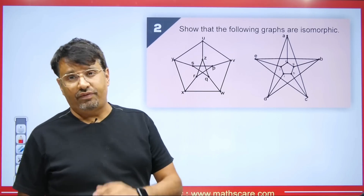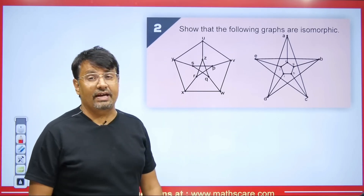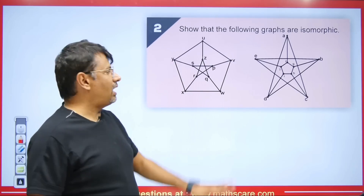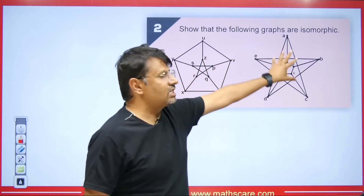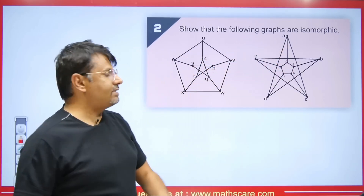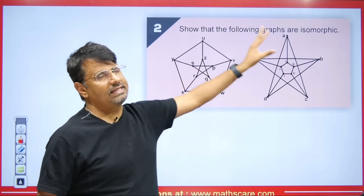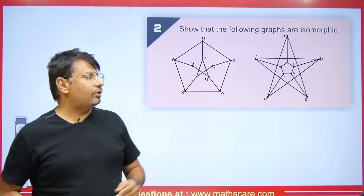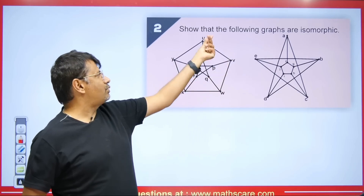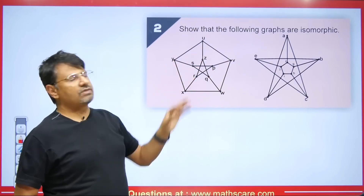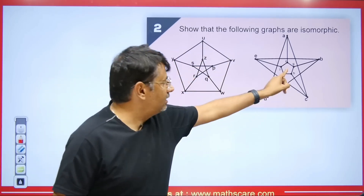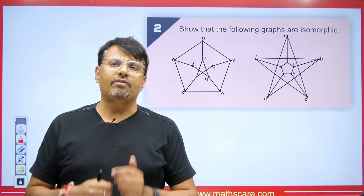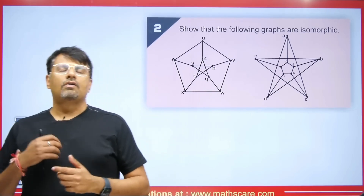Next question: show that the following graphs are isomorphic. First, we check the number of vertices — both have 10 vertices. Edges are also equal in both. Now checking the degree: the degree of each vertex in both graphs is 3. So all vertices in both graphs have degree 3, meaning the degree condition is also satisfied. Now we will check one-to-one correspondence of edges and vertices.